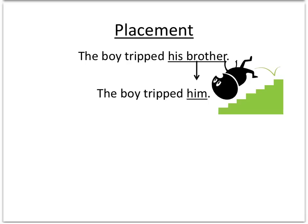Let's chat about placement. In English, the placement of a direct object pronoun is not even an issue, because it goes exactly where the direct object was. So if we look at the sentence from part one of this lecture: the boy tripped his brother. Who or what was tripped? The brother — that's the direct object. If I wanted to replace the brother and just say him, the boy tripped him — the pronoun goes exactly where the direct object was, right after tripped.